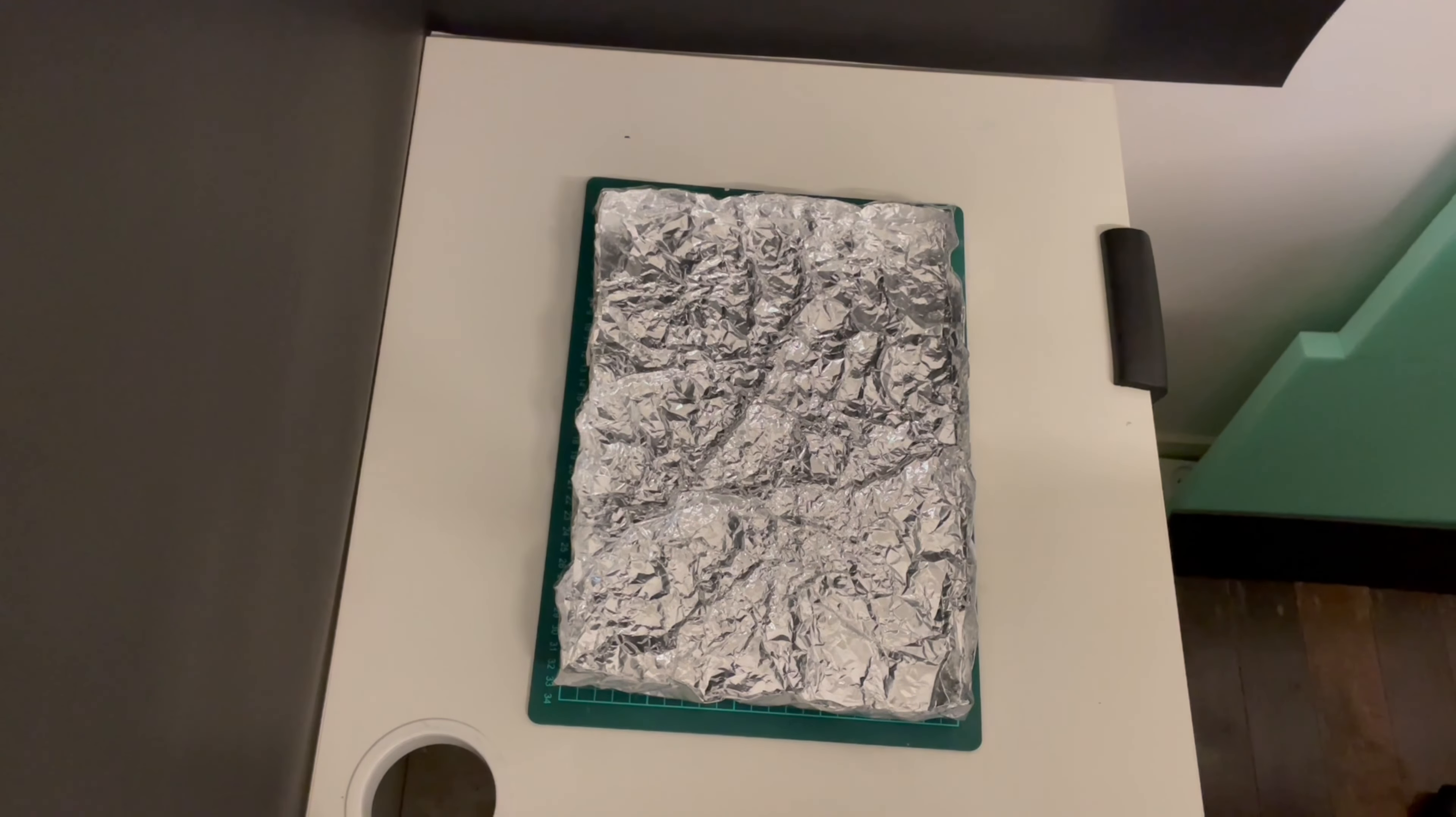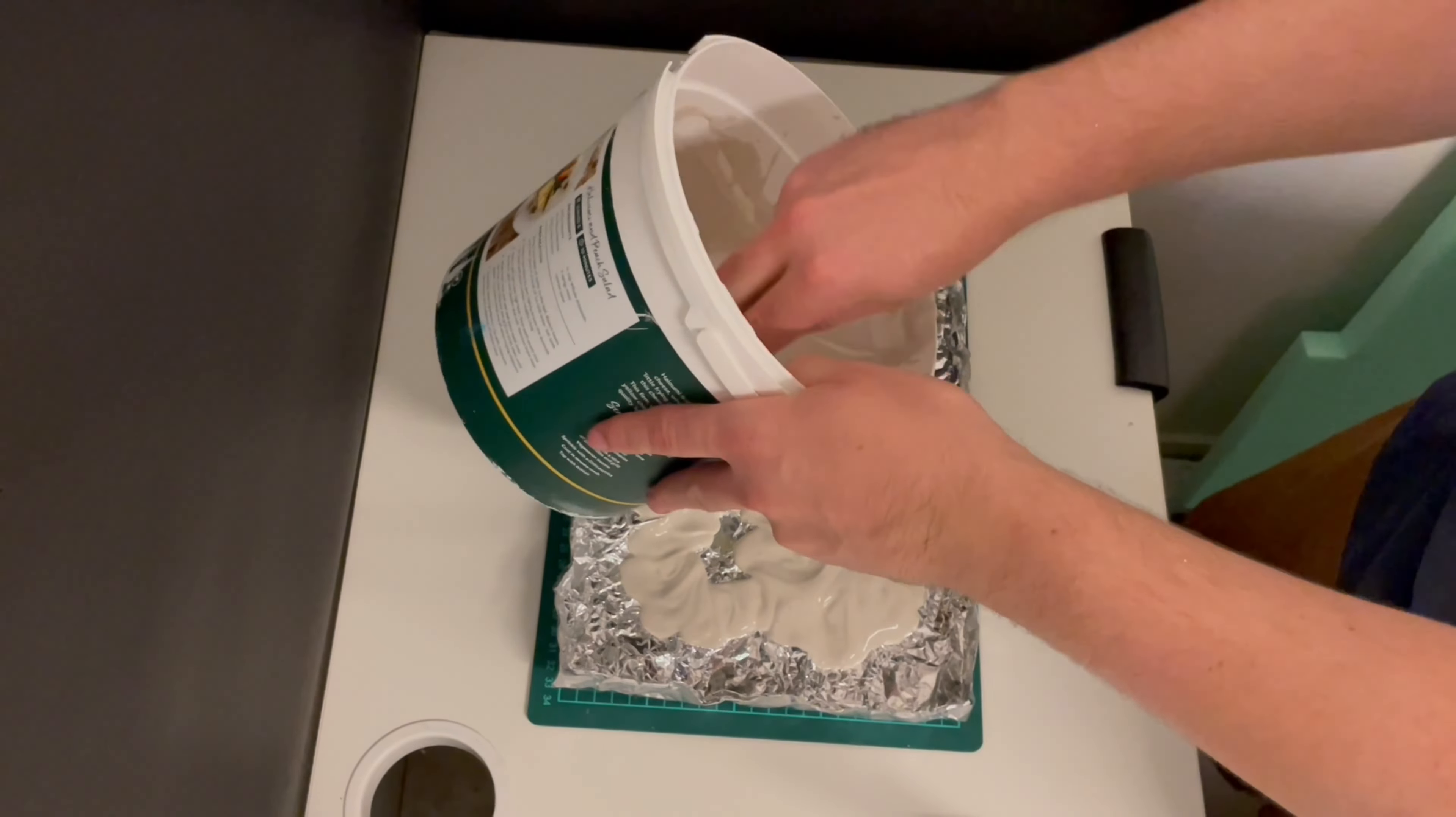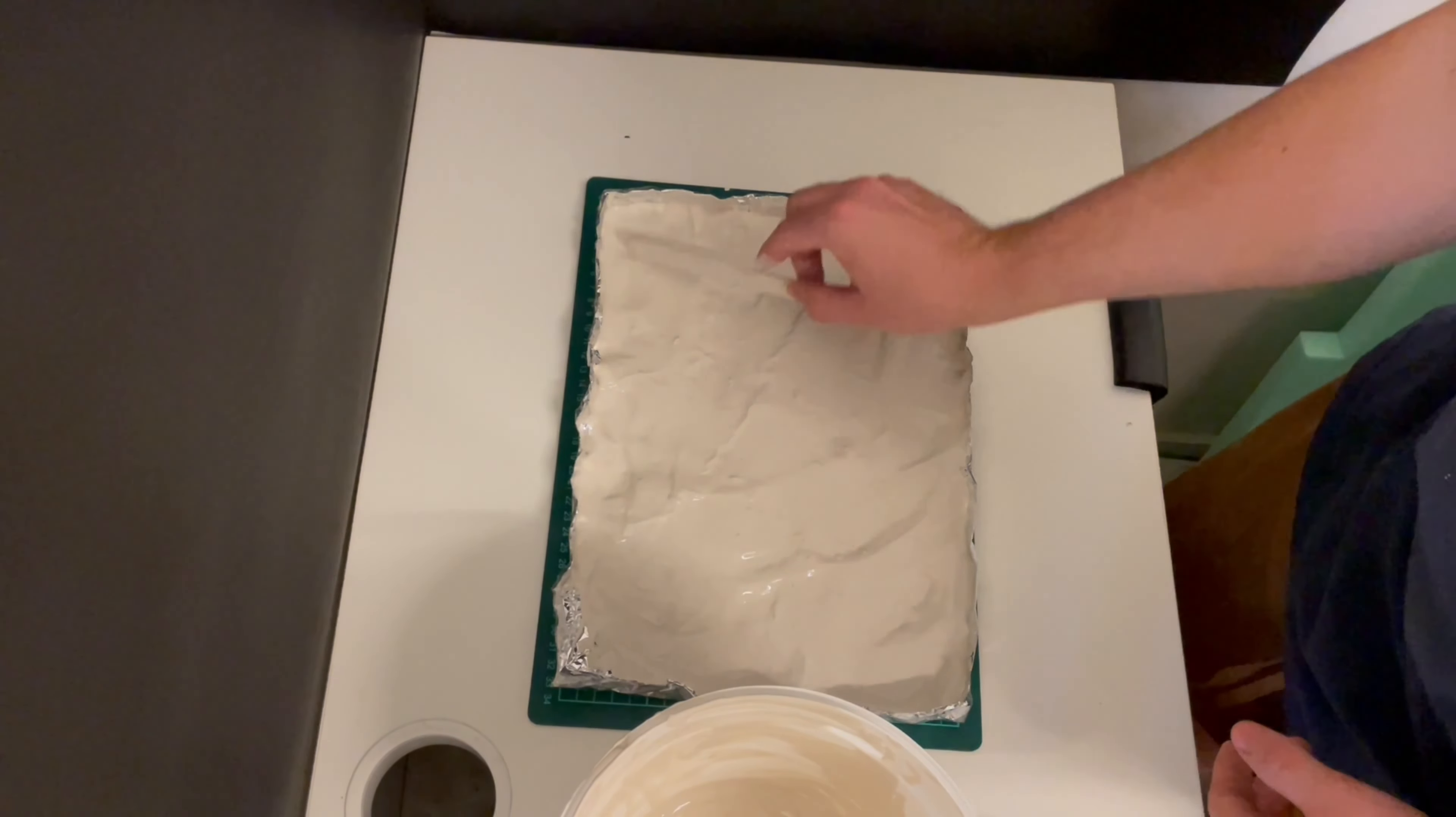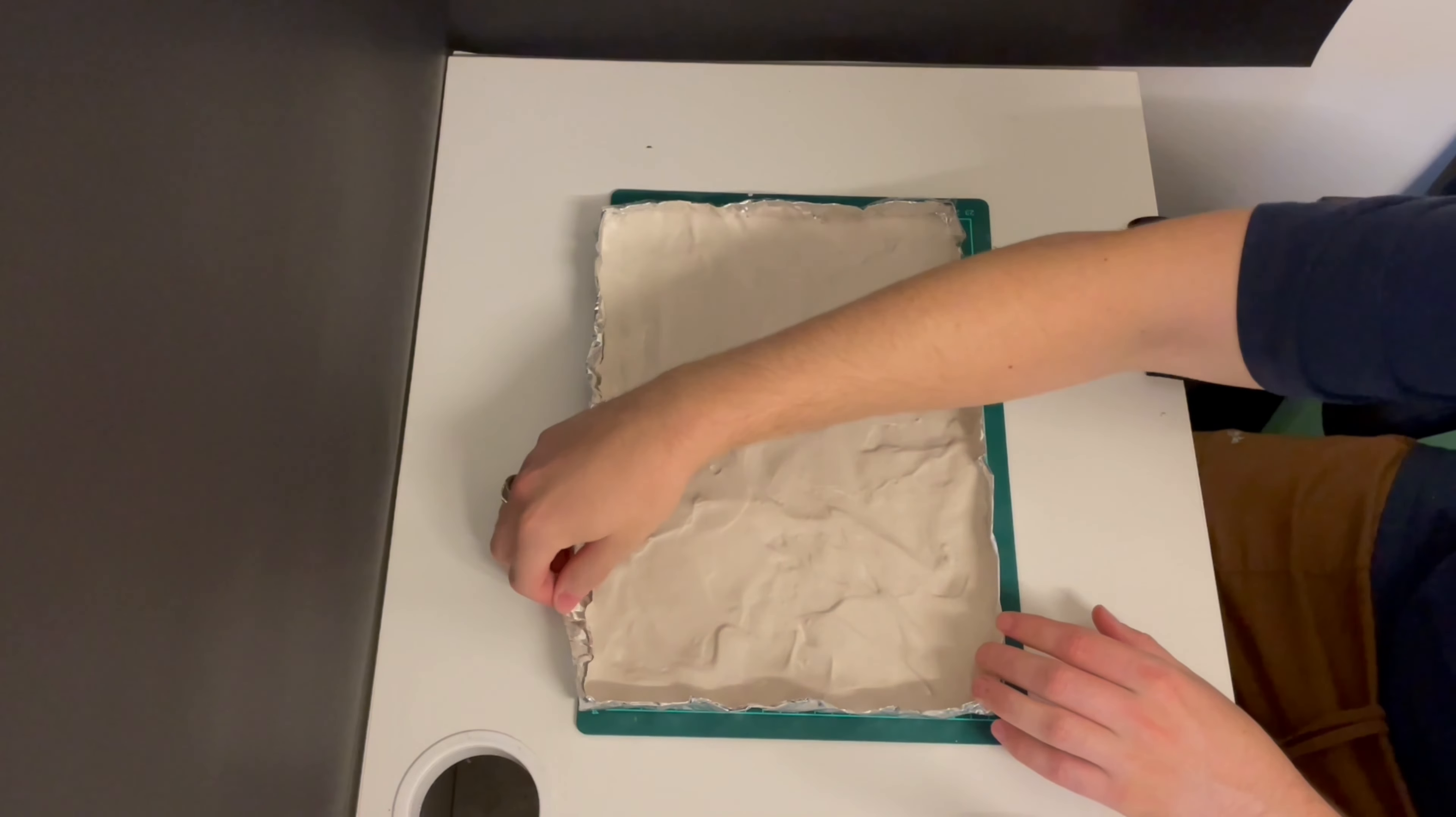While that dries, it's time to make some rock terrain to lay down. You can use rock molds if you have them, but I just use a mold I made from aluminum foil and pour plaster of Paris into. The foil gives a really nice rock texture and is extremely cheap and easy to make. I'm going to make two batches, one for the base terrain and one for filling in the pieces later.